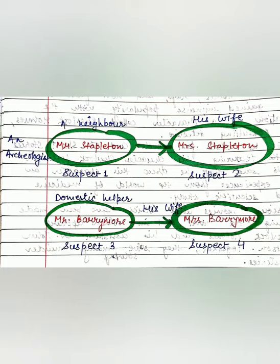Suspect number 1: Mr. Stapleton. Suspect number 2: Mrs. Stapleton, who is actually Mr. Stapleton's wife but introduced in the beginning of the story as his alleged sister. Suspect number 3: Mr. Barrymore, who is a domestic helper of the Baskerville estate. And suspect number 4: Mrs. Barrymore, who is his wife.